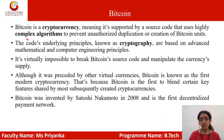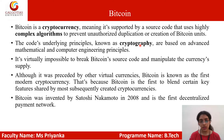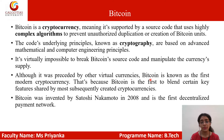Bitcoin uses complex algorithms for its creation. Cryptocurrency uses the concept of cryptography, which is the concept of encryption and decryption. By this concept, it is actually impossible to break the Bitcoin source code and manipulate its currency supply. Although after Bitcoin, so many virtual digital currencies have been invented, but Bitcoin is the most famous one.